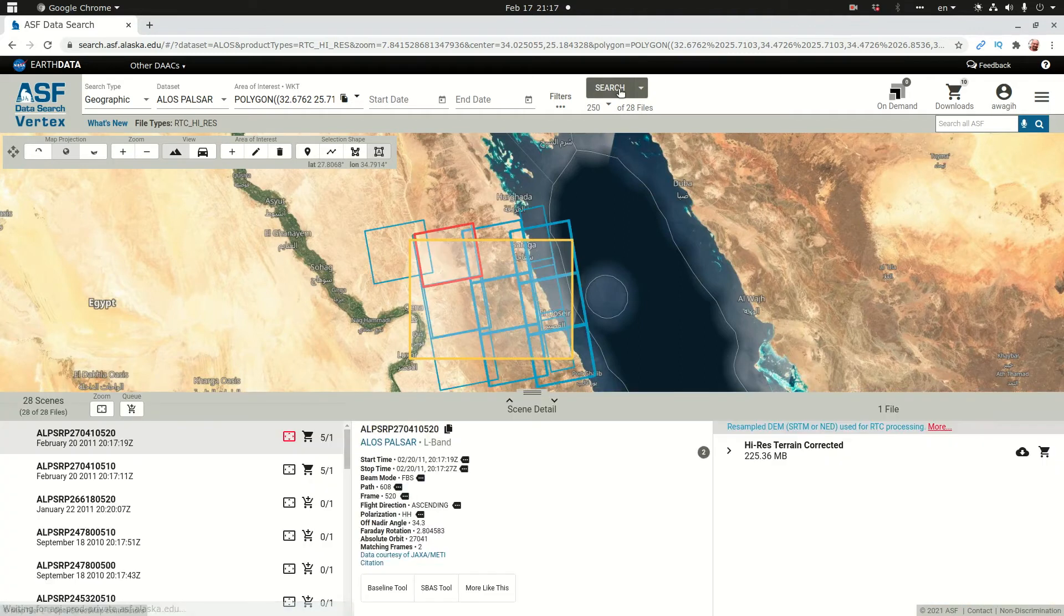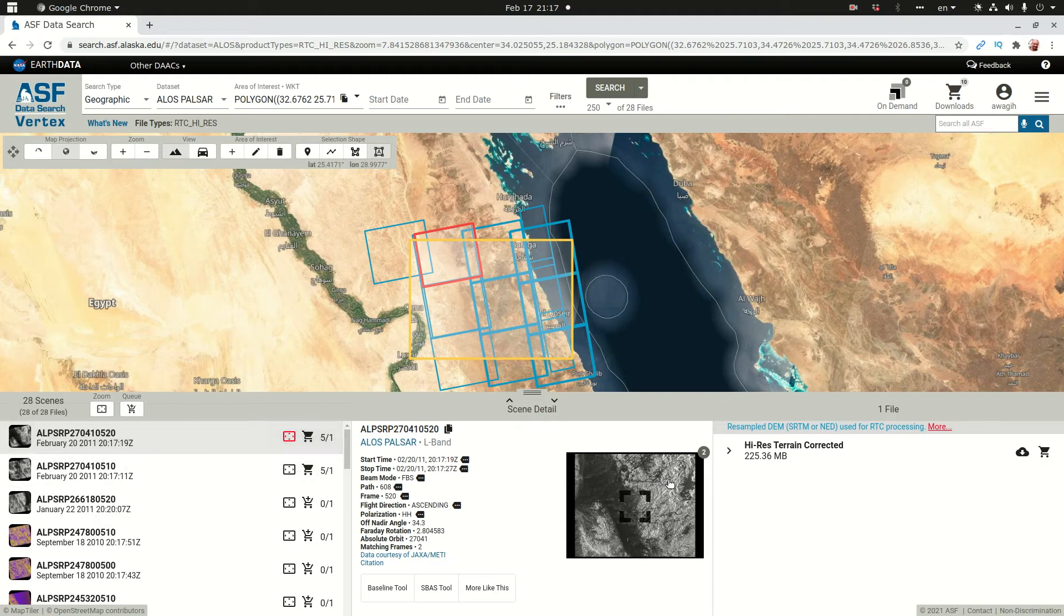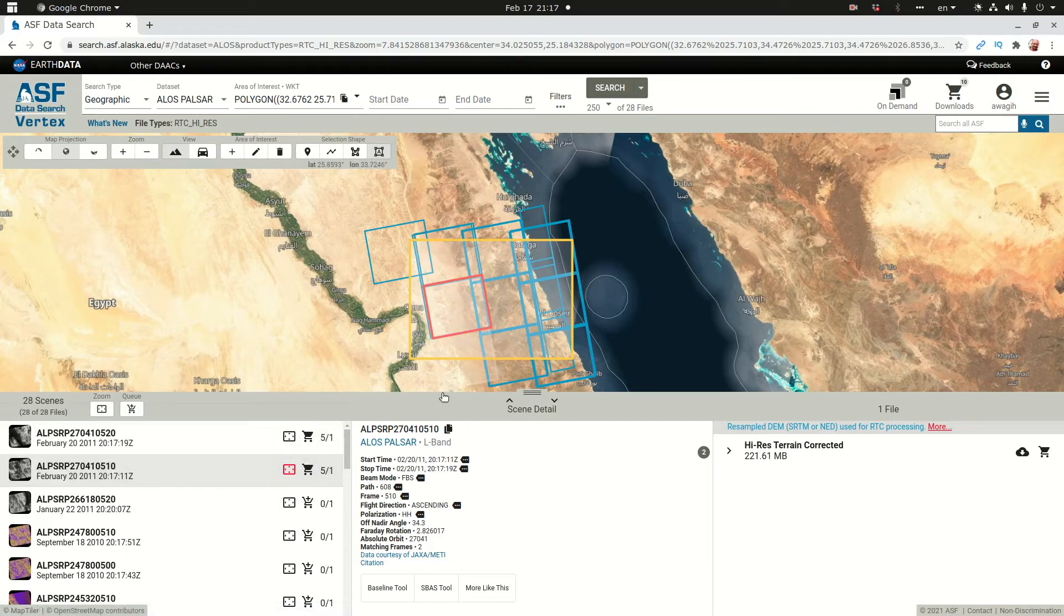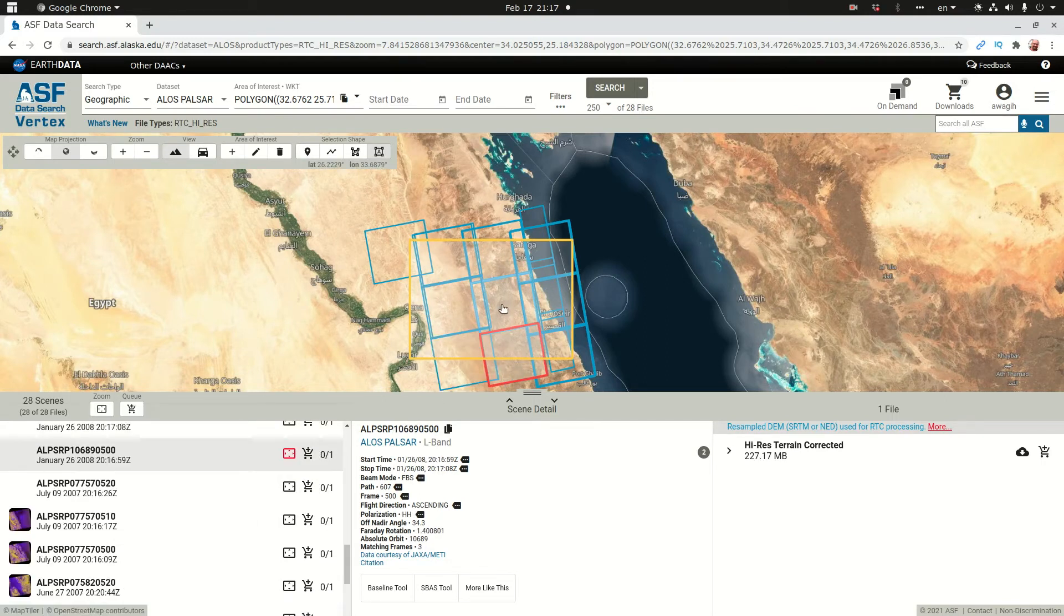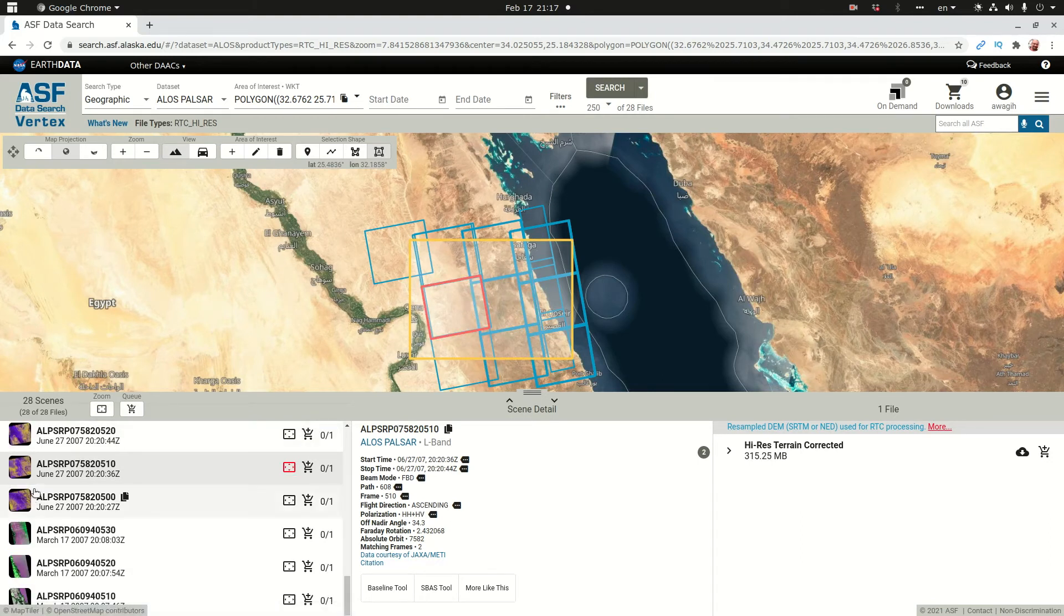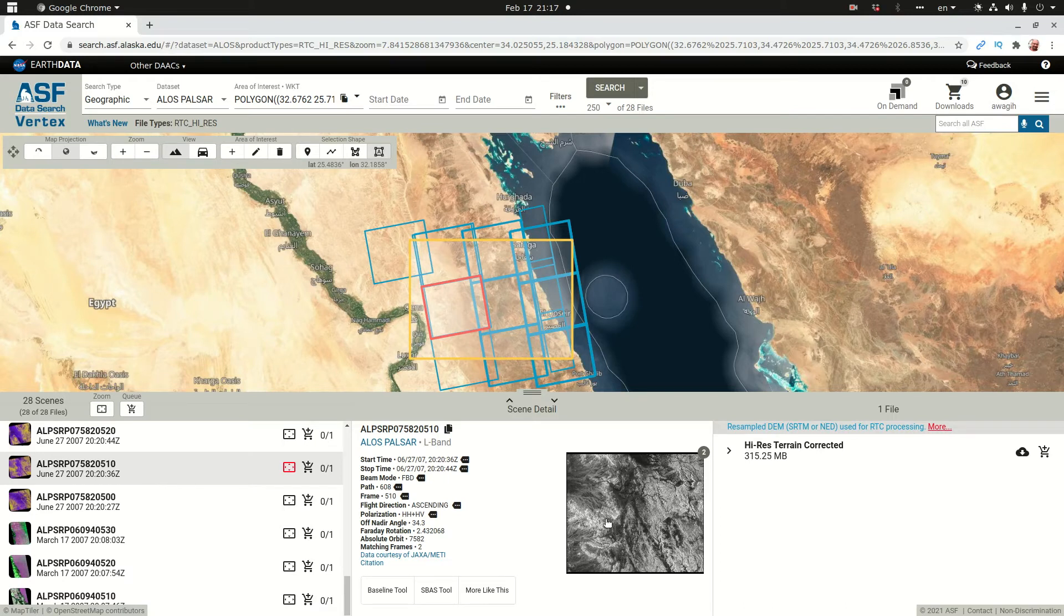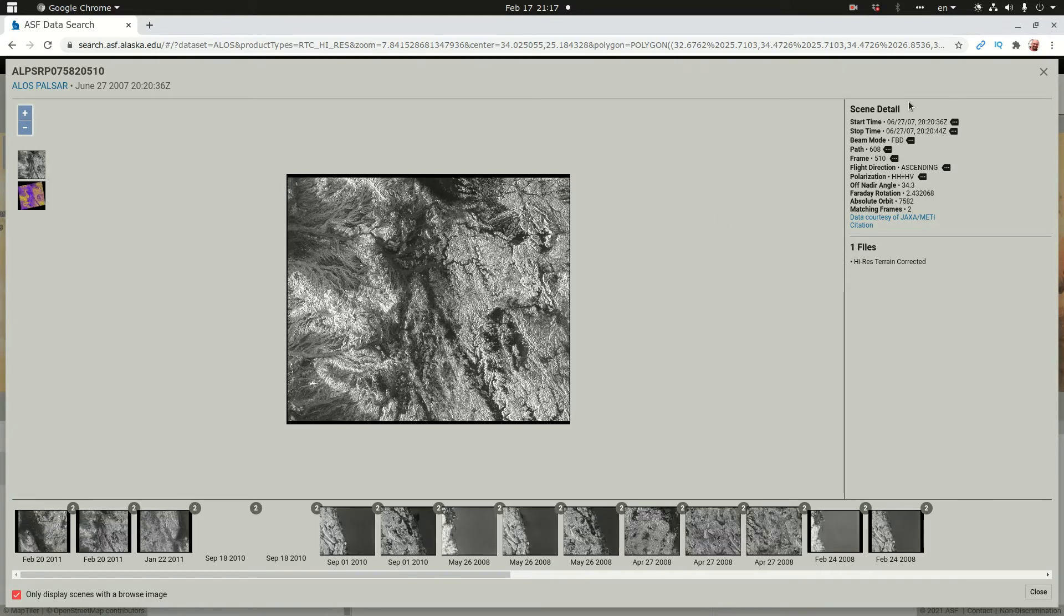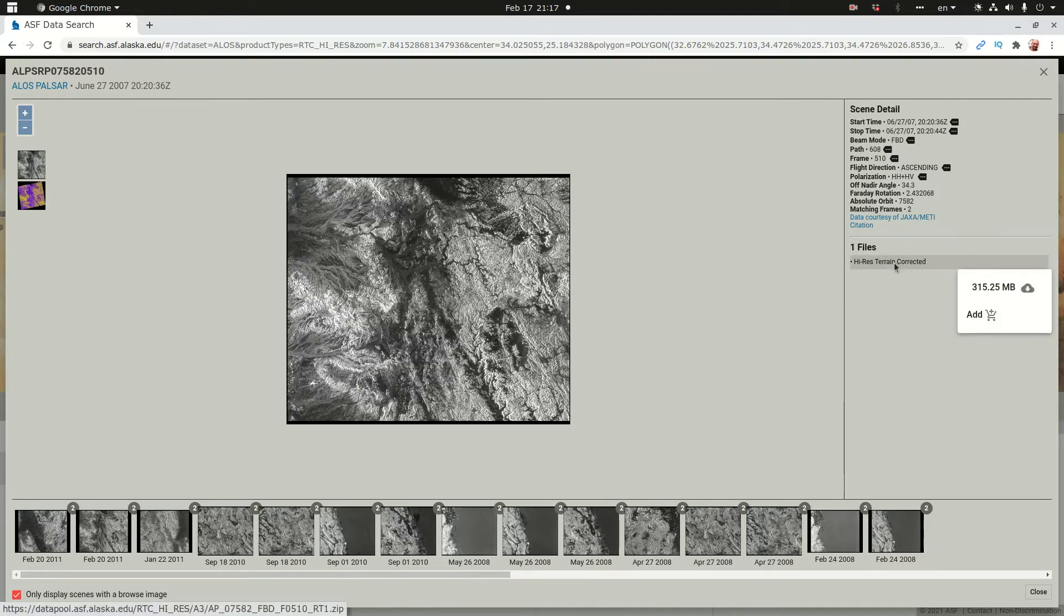I'm going to look for ALOS PALSAR high resolution terrain data that are in this area, so I'll click search. I have 28 scenes. I can click on any of the scenes and see metadata and the preview, a small version of the preview. I can also click on the footprint. Once I click on the footprint you see that it gets the corresponding scene and you see also the small preview.